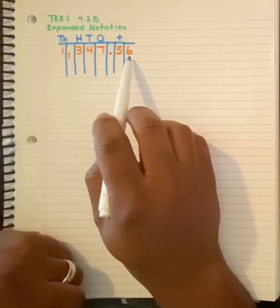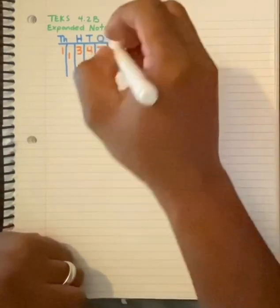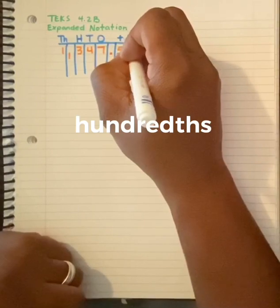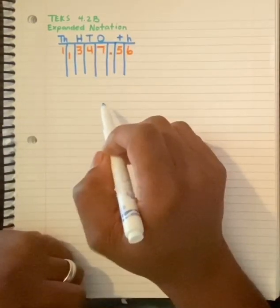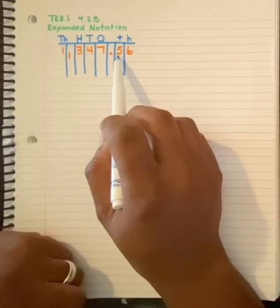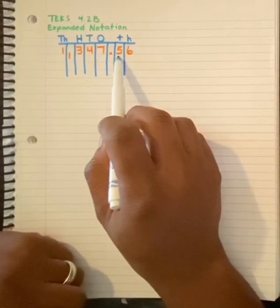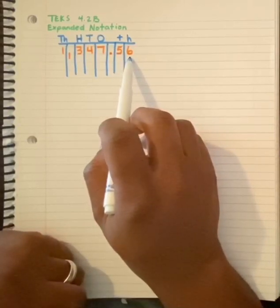And then my six is called the hundredths place, and I put a lowercase h. One way I like to remember it is this can represent dimes, and this can represent my pennies.